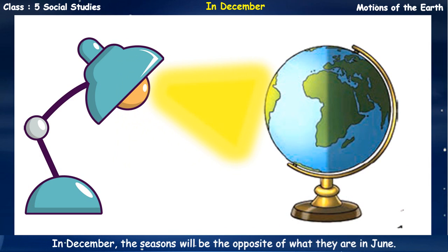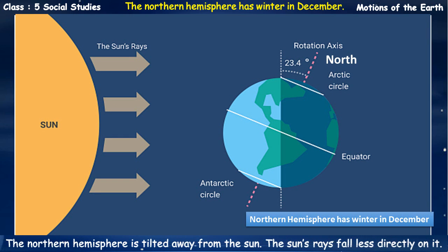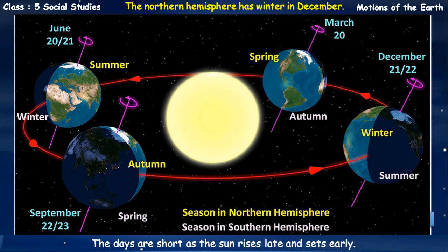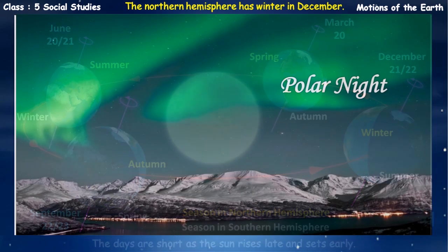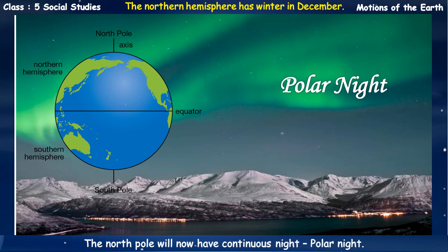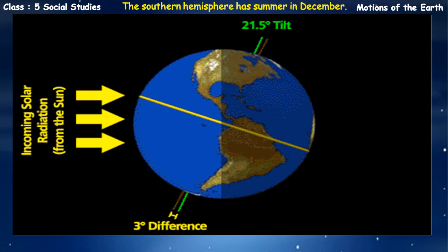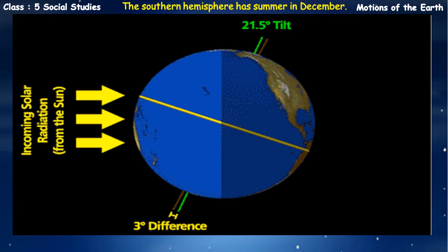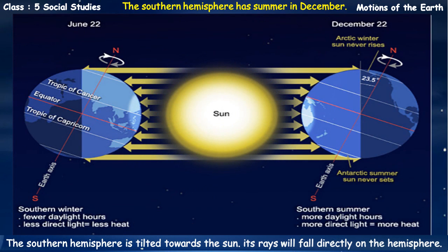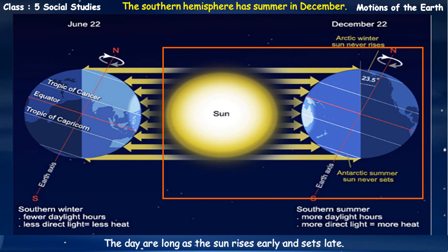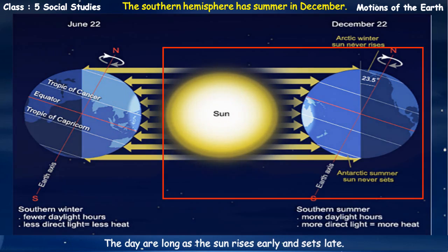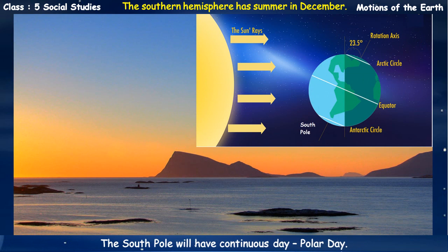In December, the seasons will be exactly opposite of what they are in June. The Northern Hemisphere has winter in December – it is tilted away from the sun, the sun's rays fall less directly on it, and the days are short as the sun rises late and sets early. The North Pole will now have continuous night – Polar Night. The Southern Hemisphere has summer in December – it is tilted towards the sun, its rays fall directly on the hemisphere, and the days are long as the sun rises early and sets late. The South Pole will have a continuous day – Polar Day.